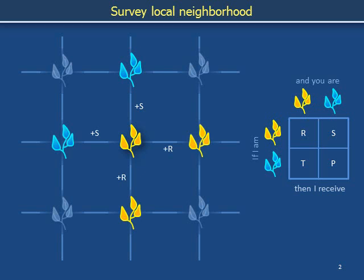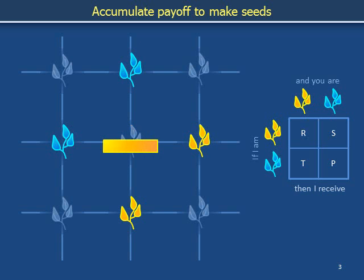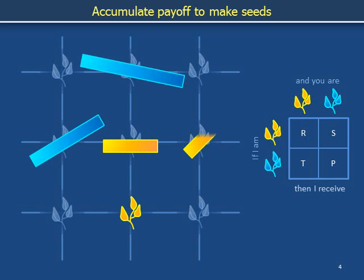For simplicity, we will only consider interactions between nearest neighbors for now. The sum of these payoffs — S, R, R, and S — are combined for a total payoff that we can invest in the production of seeds at the end of the generation. As illustrated explicitly for our four neighbors, the other sites in the system have also accumulated total payoffs that they can invest to produce seeds of their own.